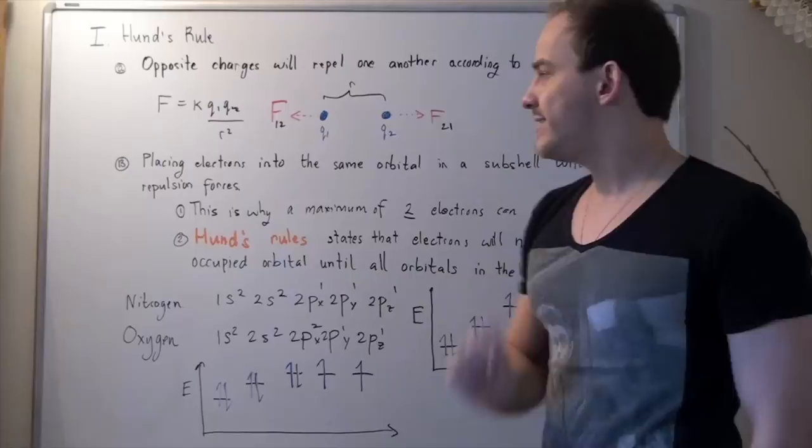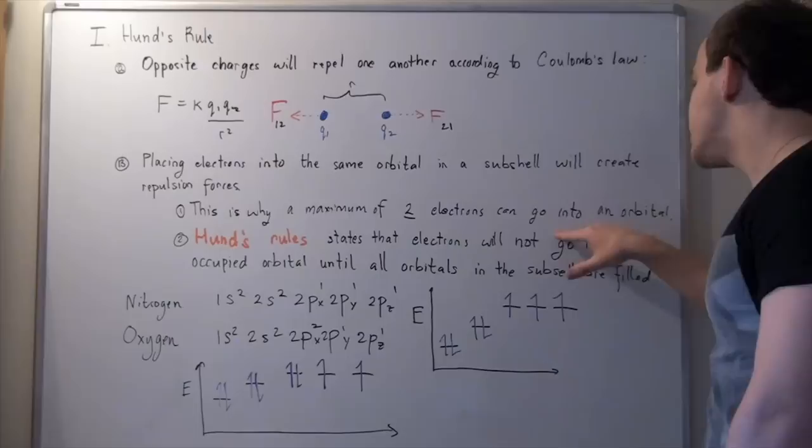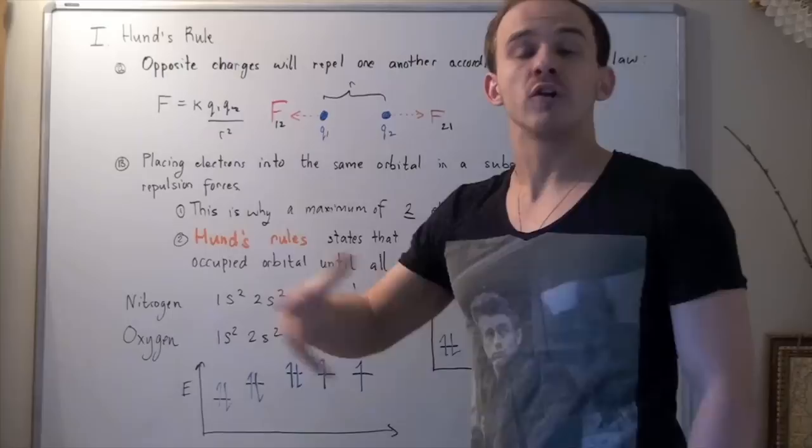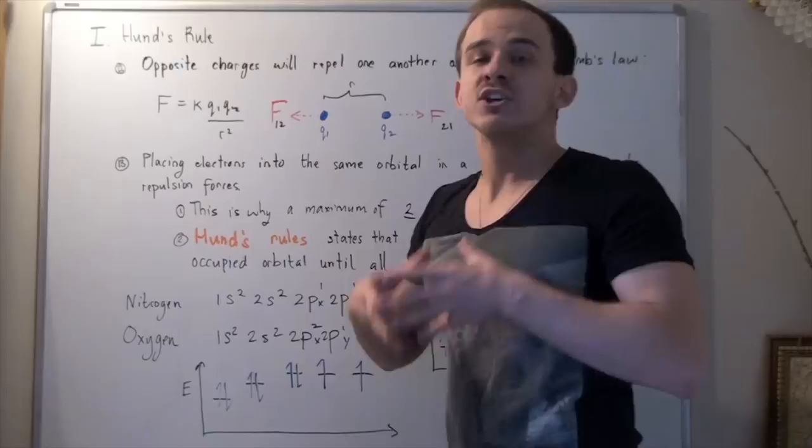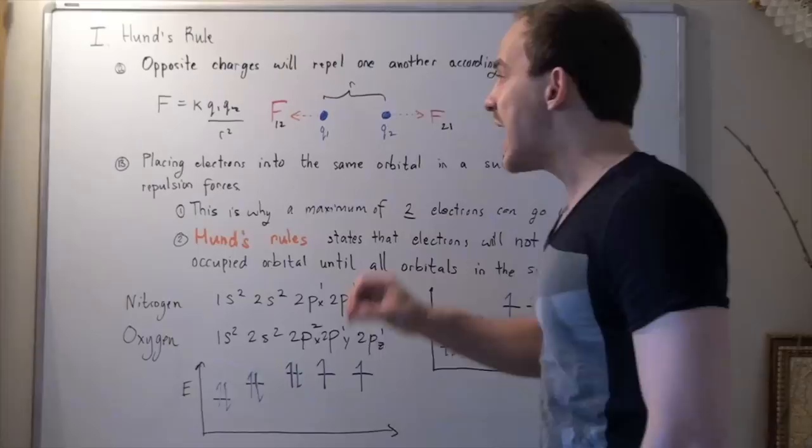And this explains two ideas. This is why a maximum of two electrons can go into an orbital, because if we place three, four, or five electrons into the same orbital, this will increase our force dramatically, creating a lot of repulsion forces, creating a lot of repulsion.